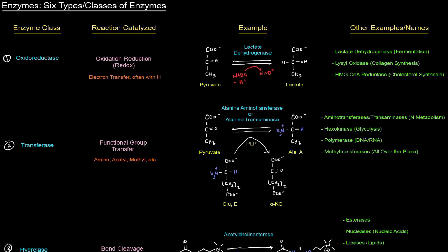The first enzyme class is oxidoreductase. Oxidoreductases catalyze oxidation-reduction reactions, or redox reactions — the name tells you a lot there. They catalyze electron transfers, and often with hydrogens, because in biochemistry it's easier to track hydrogens than electrons. The gain of hydrogens or bonds to hydrogen is a reduction, and the loss of bonds to hydrogen is an oxidation.